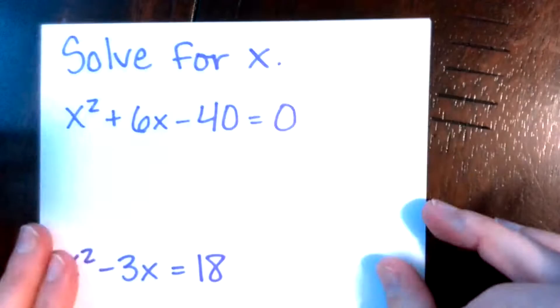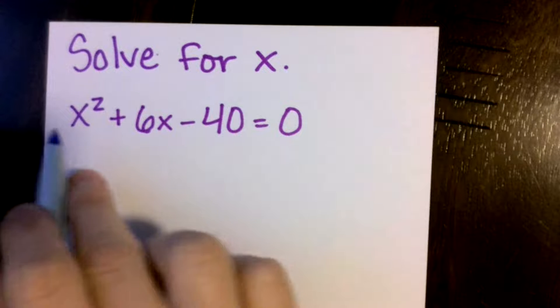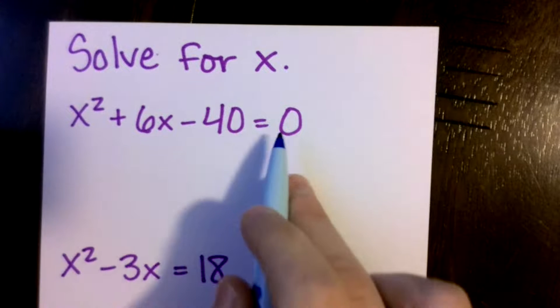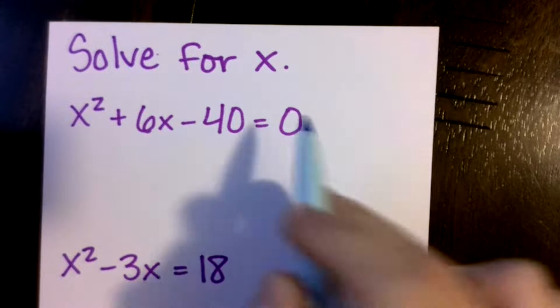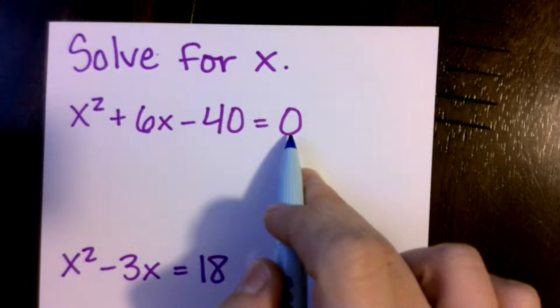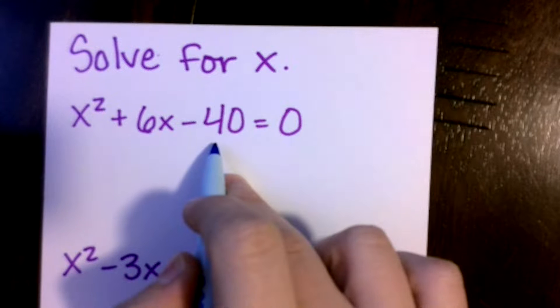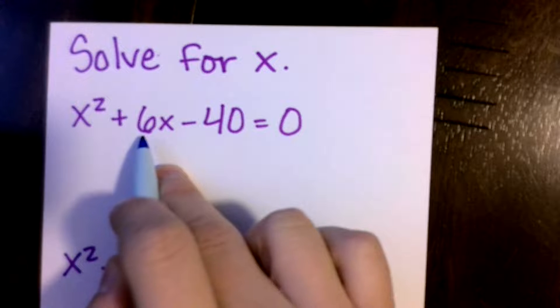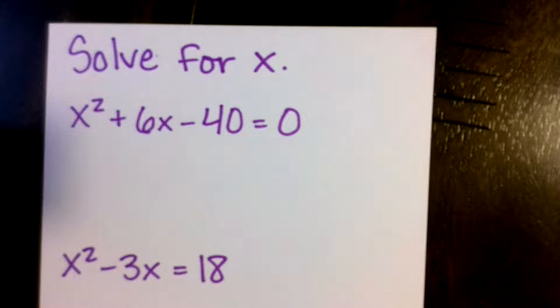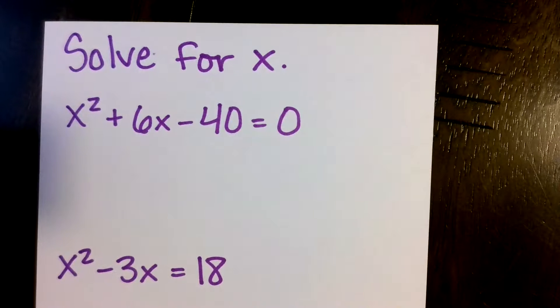The one step up we'll go from that is solving. So it's just going to have one more step. I still am looking for two numbers. It does have to be set equal to 0. We will have to get it set equal to 0 first, but I always have to have it set equal to 0 if I'm solving by factoring. But then I'm still looking for two numbers that multiply to be negative 40 and add to be 6.